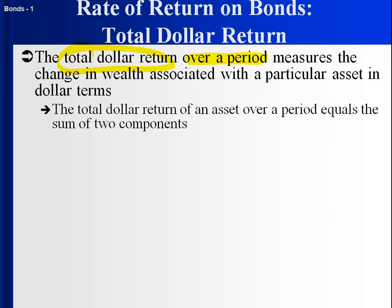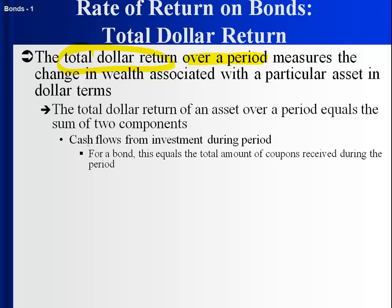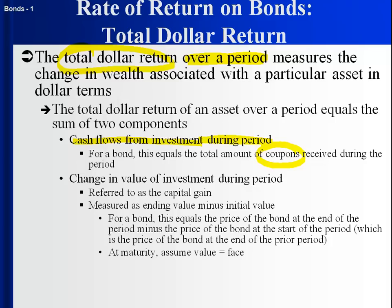There are two components that drive the total dollar return. The first is cash flows from the investment — for a bond, that's the coupons paid during the period. At the end of the period, you've got money in your pocket because of the coupon. The second component is the capital gain: the ending value minus the initial value, which captures the change in the value of the investment.